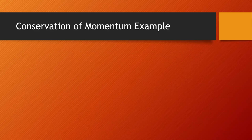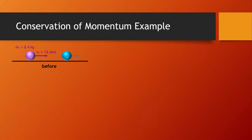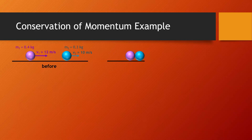Let's take a look at an example. Here we have two balls: a purple ball of mass 0.4 kilograms moving to the right at 12 meters per second, and a blue ball of mass 0.3 kilograms moving to the right at 10 meters per second. Because the purple ball is moving faster, there will be a collision. After the collision, the purple ball is only traveling 9.5 meters per second.